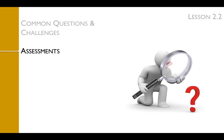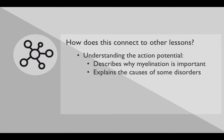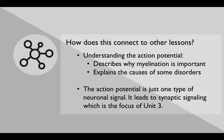At the end of this lesson, students should be able to describe the process by which neurons generate and conduct an action potential down the length of the axon, and predict the consequences of disrupting this process. An understanding of the action potential is important because it describes why myelination matters — which will be discussed in the next lesson — and explains the causes of some disorders covered in Lesson 2.5. Additionally, the action potential is just one type of neuronal signal; it leads to synaptic signaling, which is the focus of Unit 3.